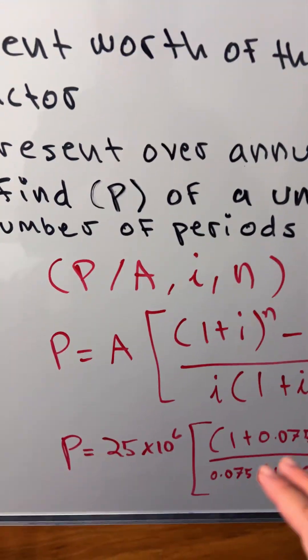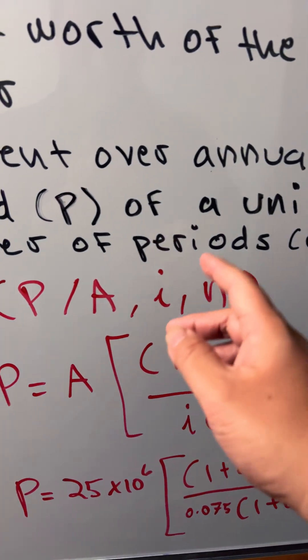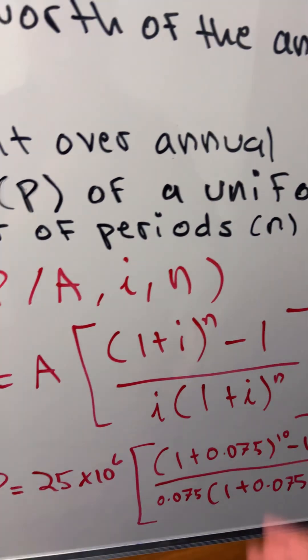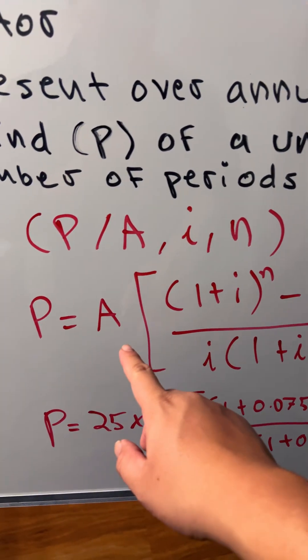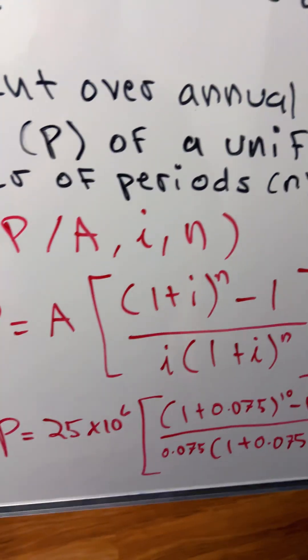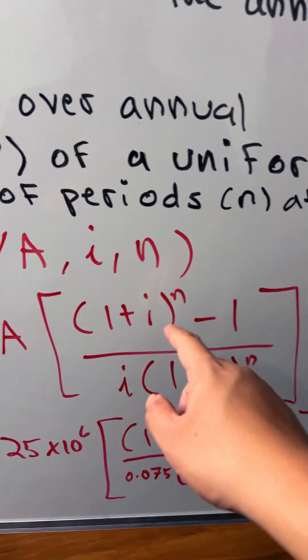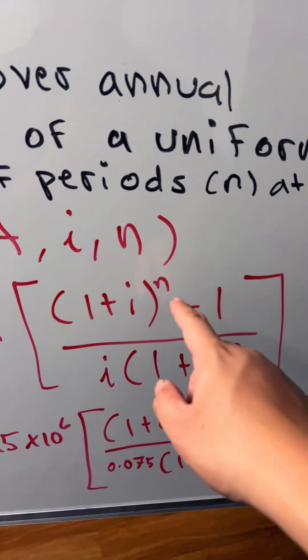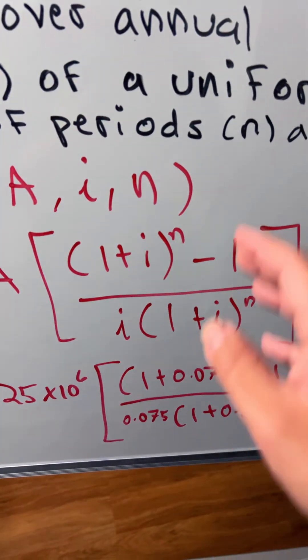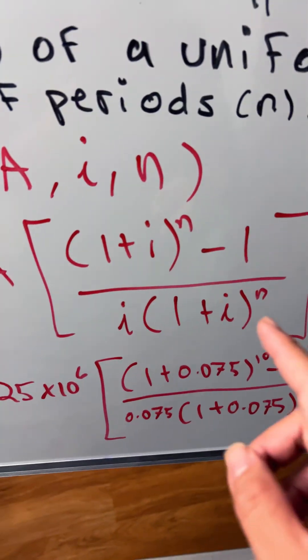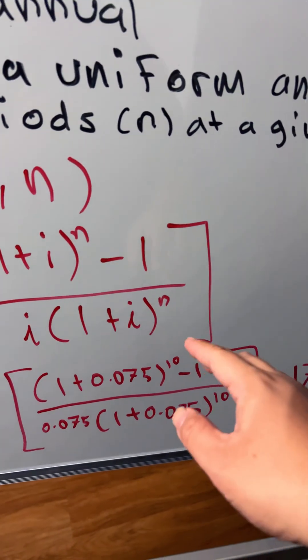Here we have the equation. We have the P/A and then the interest and then the number of periods. The equation is the annual cash flow times 1 plus the interest rate i raised to the number of periods N minus 1 divided by the interest rate times 1 plus the interest rate raised to the number.